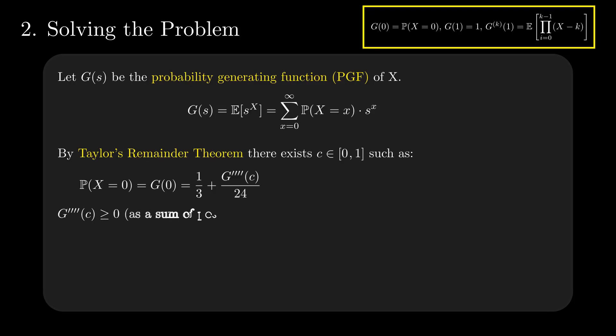As a polynomial with positive coefficients, G has a positive 4 derivative for a positive value of c. The remainder is at least 0, so the probability that X equals 0 is at least a third.